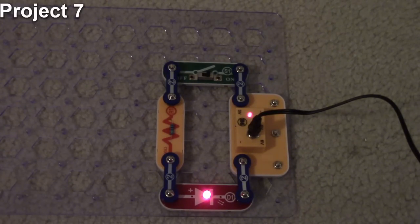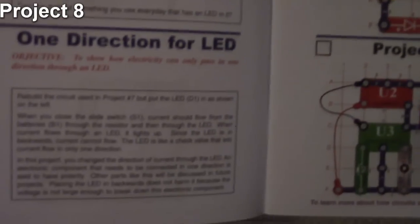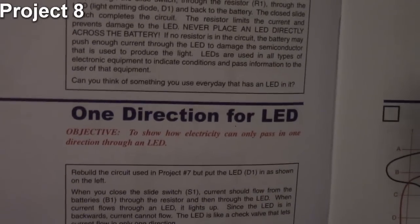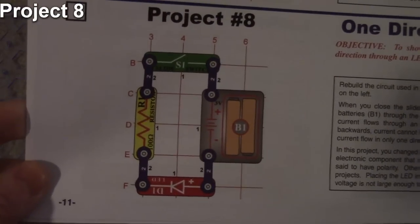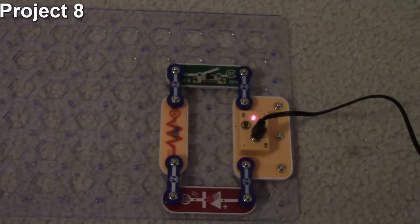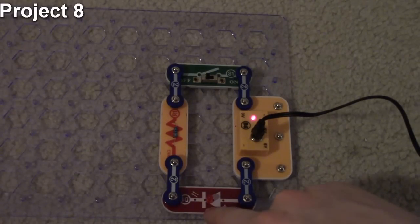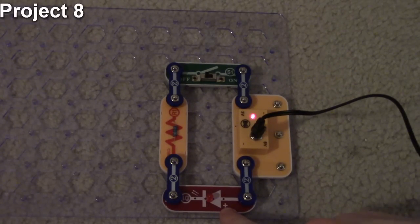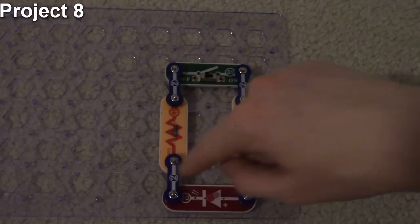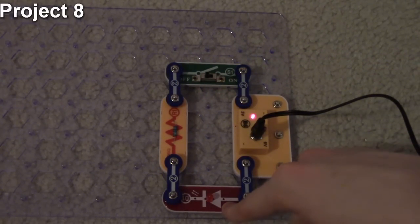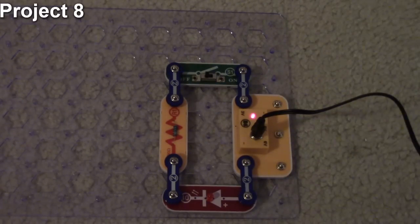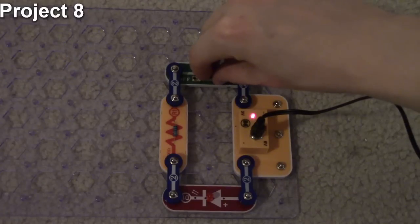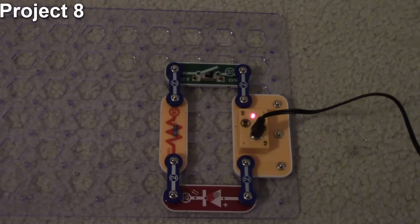Project number eight looks similar but demonstrates one-direction current for LEDs. The objective is to see how LEDs only allow current to flow one way. This time we flip the LED around. There is a polarity mark on the LED — the positive side — and since positive is on this side of the circuit, the flipped LED is technically oriented the wrong way.